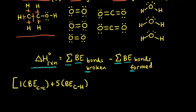Next we have to break a carbon-oxygen single bond, so we write a one and then the bond enthalpy for a carbon-oxygen single bond. And then for this ethanol molecule, we also have an oxygen-hydrogen single bond, so we write a one and the bond enthalpy for an oxygen-hydrogen single bond.